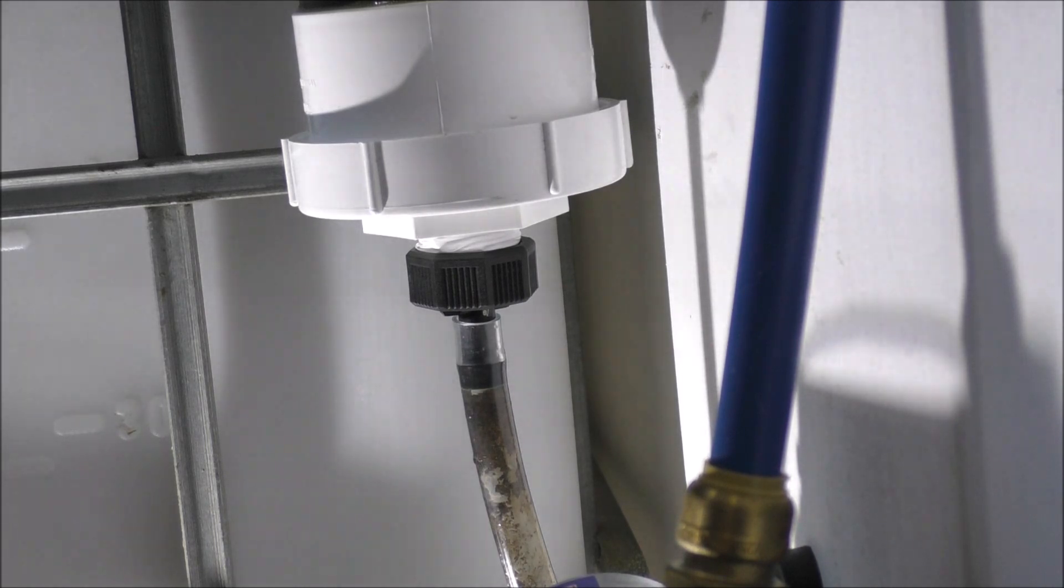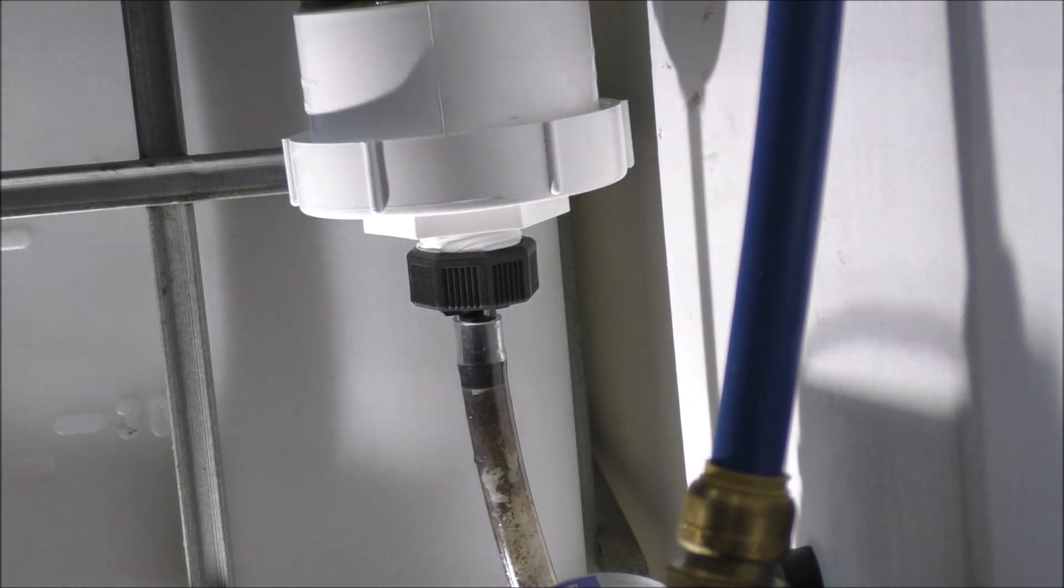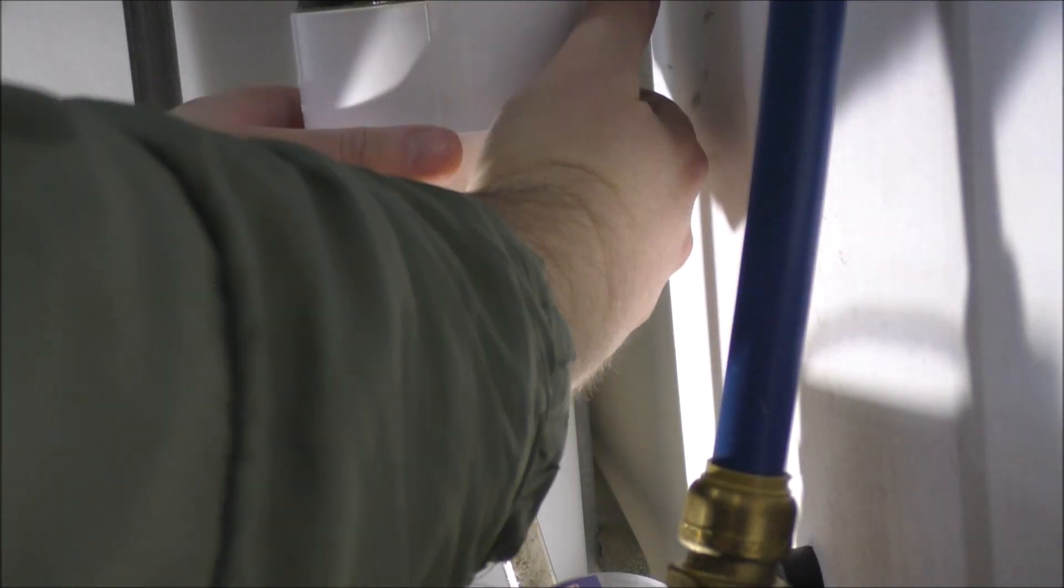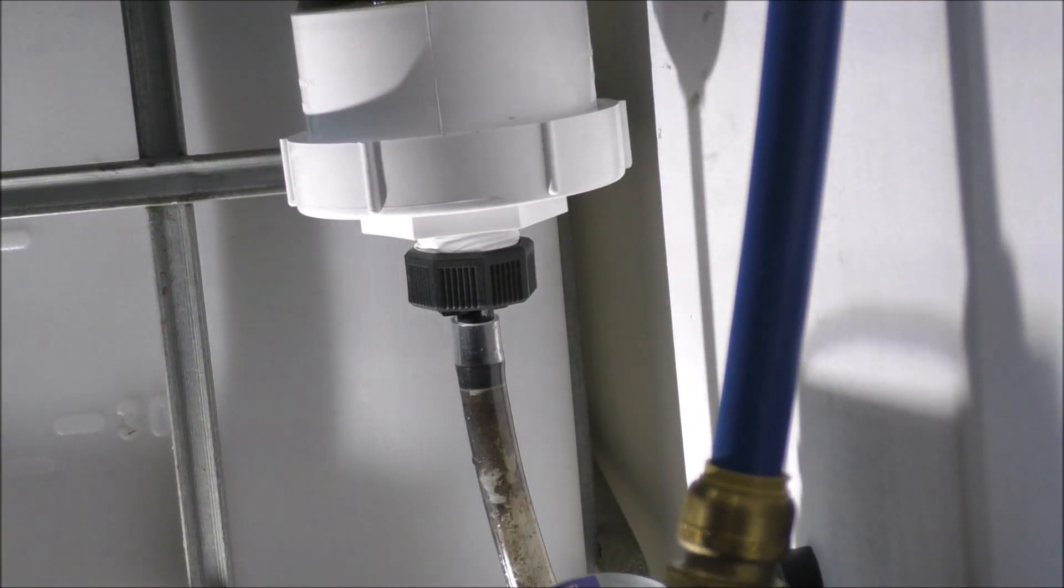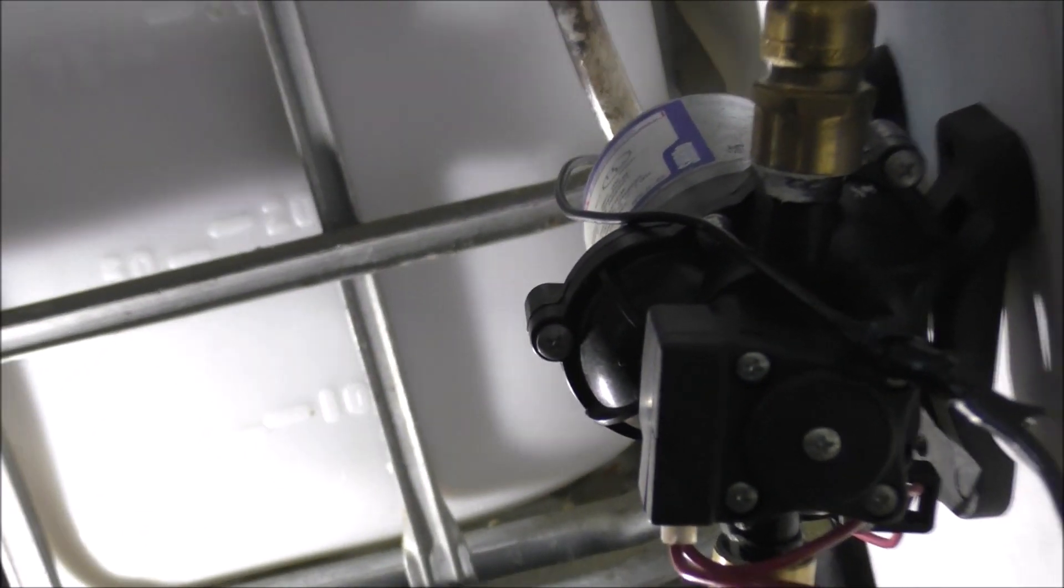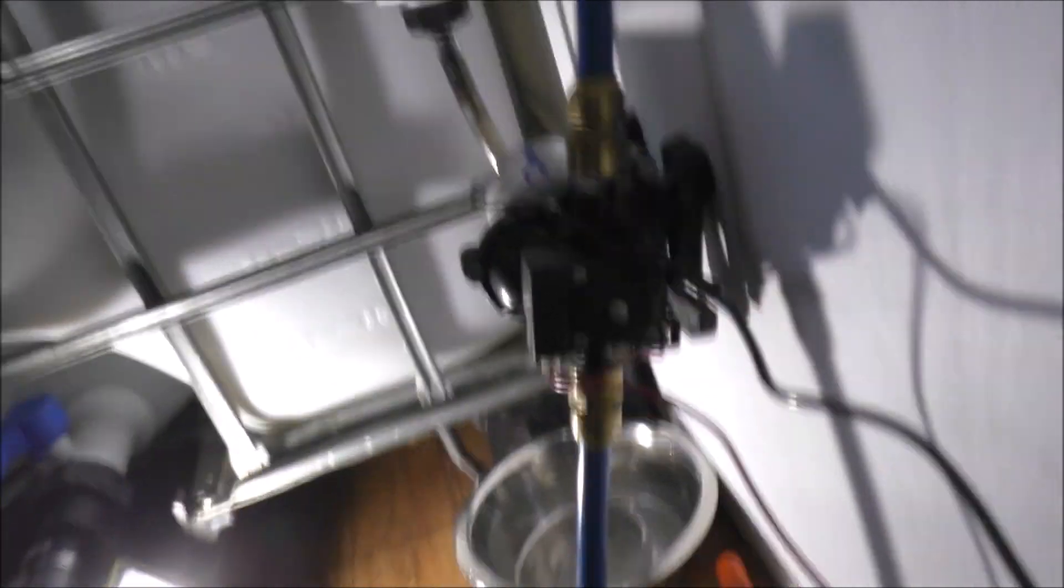And we will see if this finally solves the water leak issues at the off-grid tiny house. I hope so. But I'm going to leave this bucket here, or not a bucket, but a pan. Stainless steel pan.